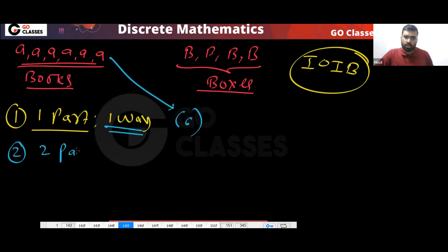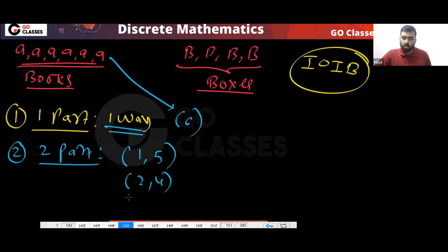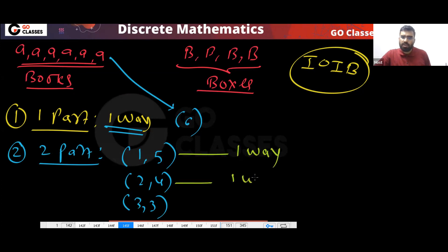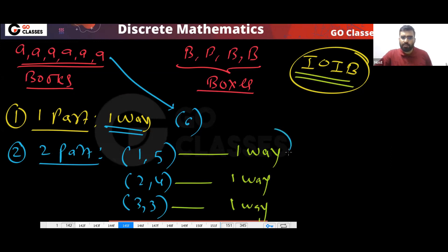If you want to create two parts, you can create 1 comma 5, or 2 comma 4, or 3 comma 3. Only these you can create. Each case has only one way — you don't even have to calculate. Always you will have one way because all the objects are the same.